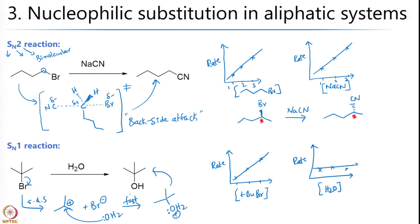This is another typical example where one can convert a bromide to an alcohol or another substituted product. I hope this has given you a flavor of what substitution reactions are. We shall stop here now, and in the next lecture we shall look at elimination reactions, which build upon these principles. Thank you.